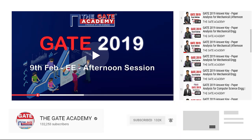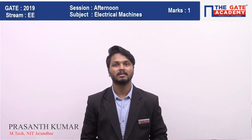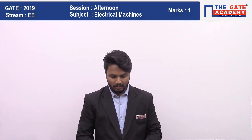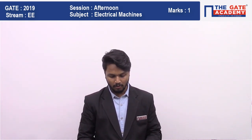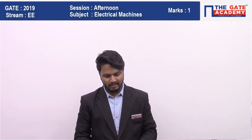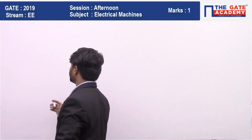Hello students, now we will be solving memory based questions of GATE 2019. In this question we are going to solve a question from electrical machines from GATE 2019. The question is: five alternators, each 5 MVA, 13.2 kilovolts, with 25% reactance on its own base, are connected in parallel to a bus bar. The short circuit level in MVA at the bus bar is?